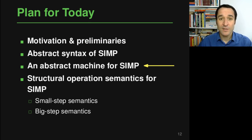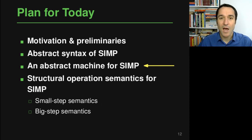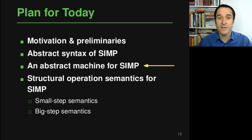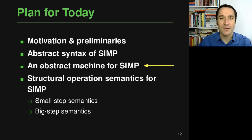In this video and the next and the one afterwards, we look at three different ways to define the semantics of the SIMP language. These three different ways are at different levels of abstraction. We start at the lowest level, where we will define an abstract machine for that language — essentially a computer designed specifically for executing this one language only — and we'll use this hypothetical machine to explain what the language really means.